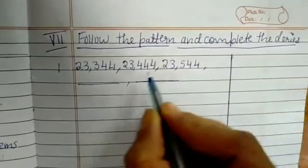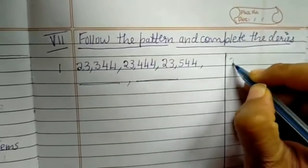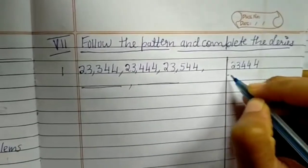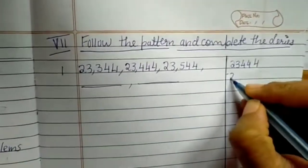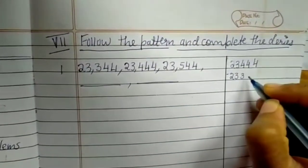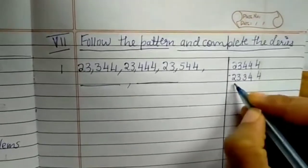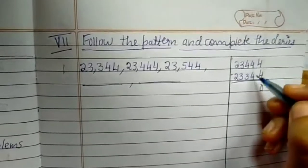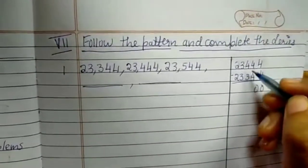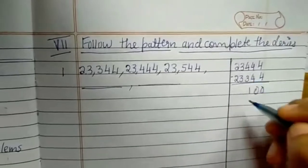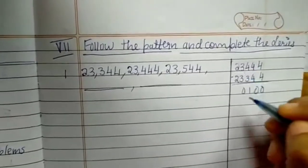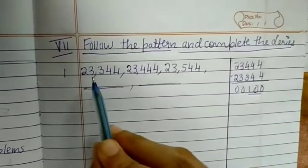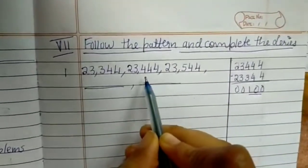First, we should always take the bigger number. So 23,444 minus 23,344. 4 minus 4 is 0, 4 minus 4 is 0, 4 minus 3 is 1, 3 minus 3 is 0, and 2 minus 2 is 0. So we came to know that 100 is added to the number to get the next number.